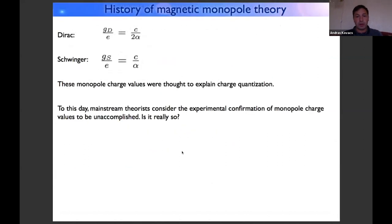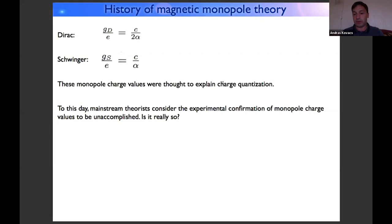Here is the history of magnetic monopole theory. As most of you know, Dirac and Schwinger used theoretical ideas to estimate what should be the charge of the magnetic monopole. This is the ratio they estimated between the magnetic monopole charge and the electron charge — g stands for magnetic charge and e stands for electron charge. The subscripts D and S distinguish Dirac's and Schwinger's estimations, which differ only by a factor of two. To this day, theorists officially consider these relationships are not experimentally confirmed.